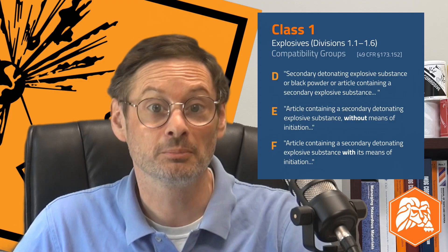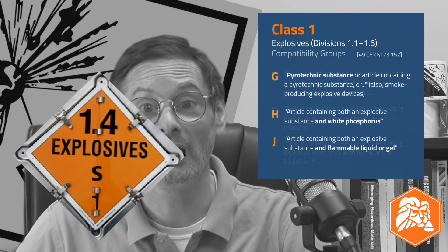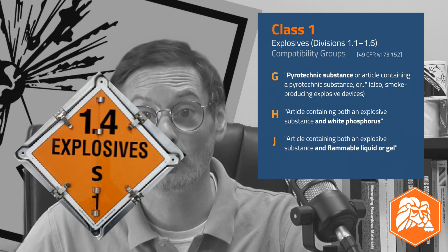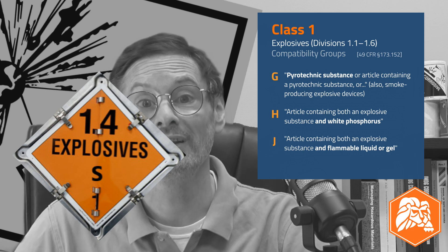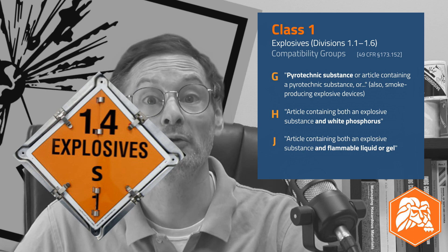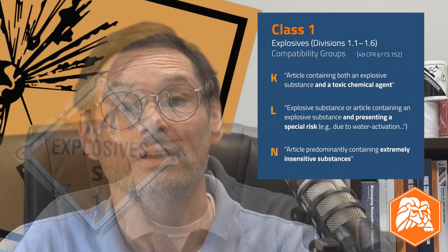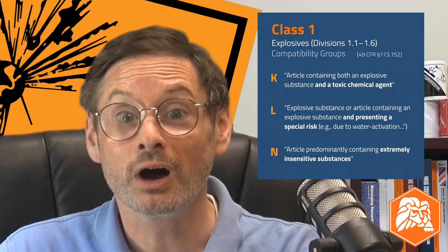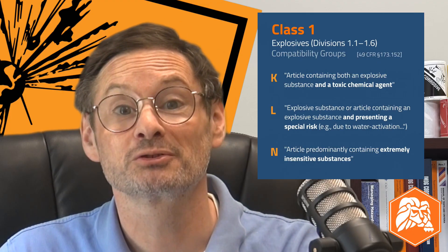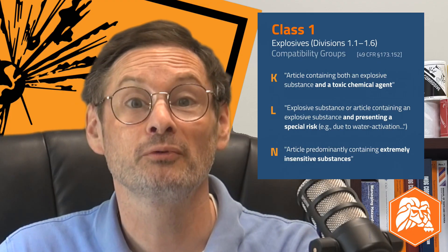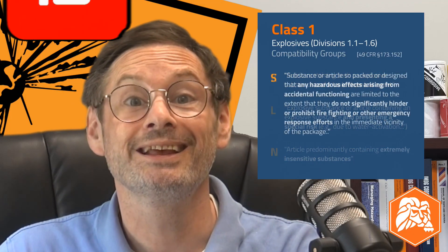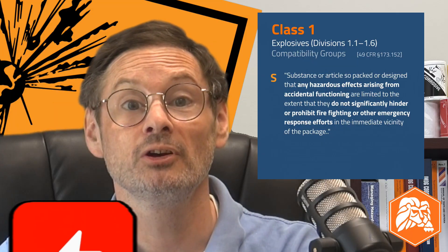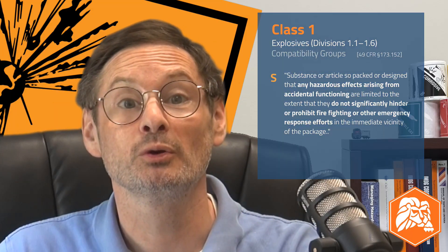You might see a placard like this out and about. This would be a Division 1.4 Explosive in Compatibility Group S. If you're like me and you never knew why explosives placards had those extra letters on them before, go ahead and hit like on this video — let me know I'm not the only one.